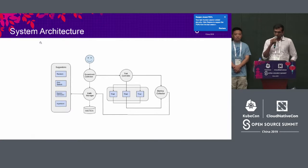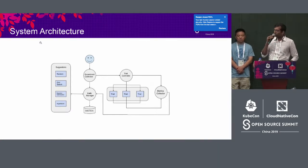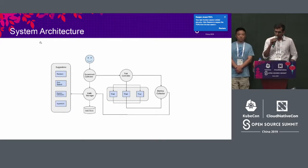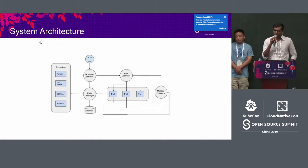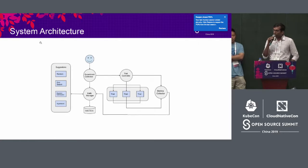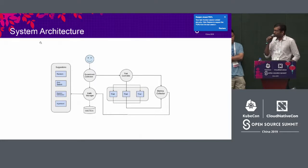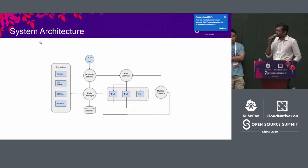This is the system architecture. The user submits an experiment, and the experiment controller — a Kubernetes custom controller — picks it up and talks to the right suggestion service through the Katib manager. Once the experiment controller gets suggestions, it creates trials. The trial controller picks those up and starts executing trials, emitting metrics. The metric collector, a separate process, collects metrics during the trial lifetime and writes them to the data store. These metrics are then used by the suggestion service for future suggestions, and the loop continues.